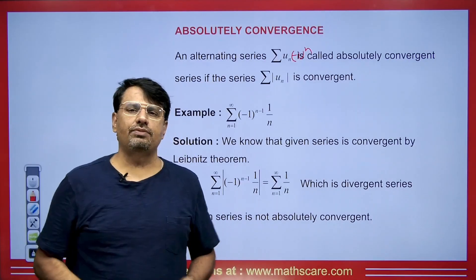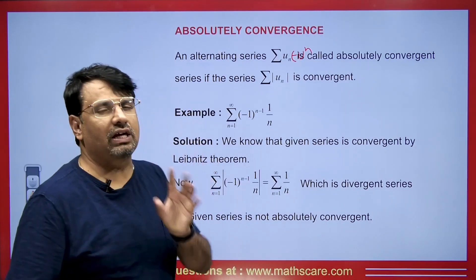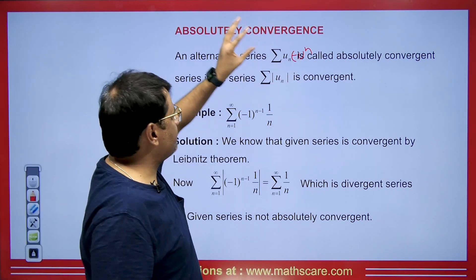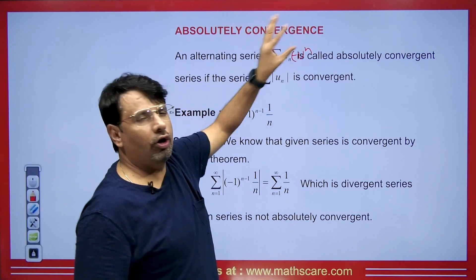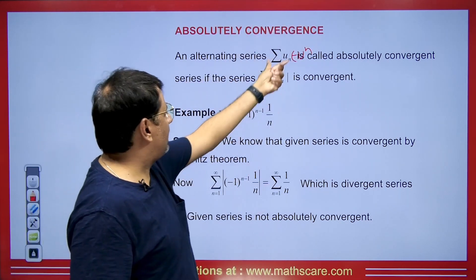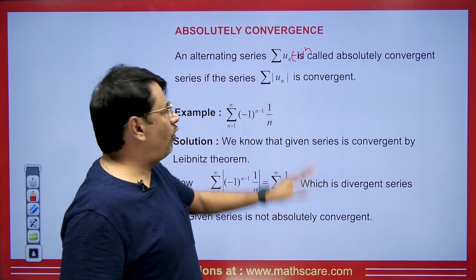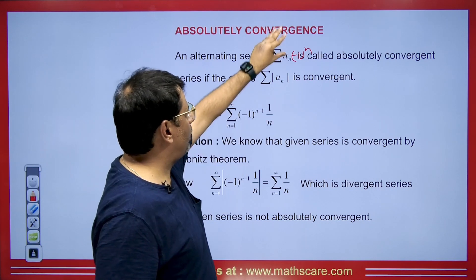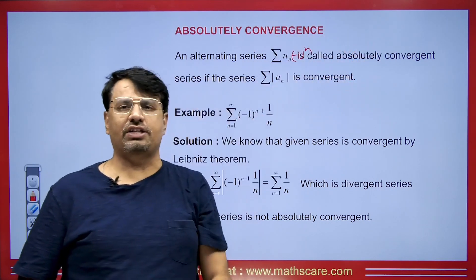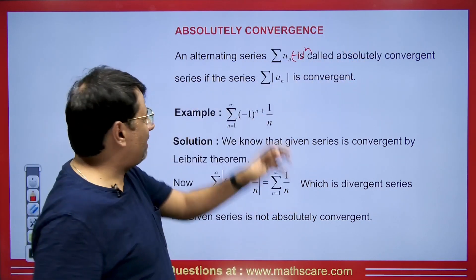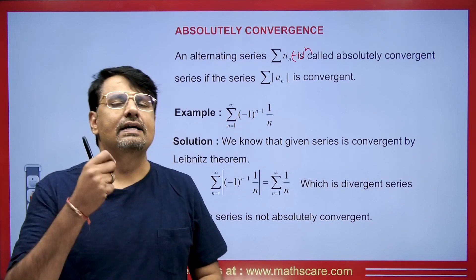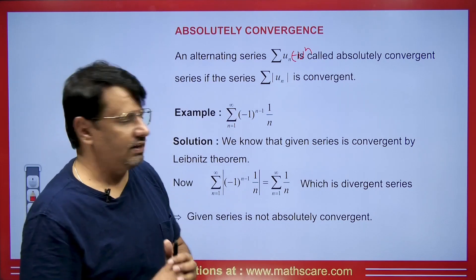First, we will understand the concept of absolute convergence. If we are given any series of alternating type and if we take its modulus and that is convergent, and the alternating series itself is also convergent, then these types of series are called absolutely convergent.